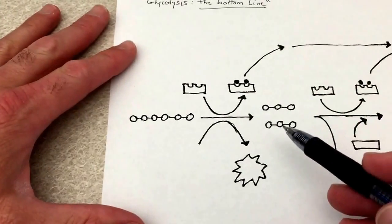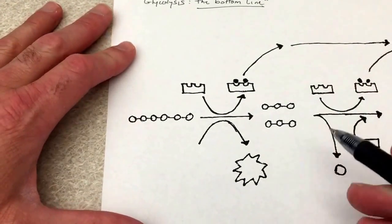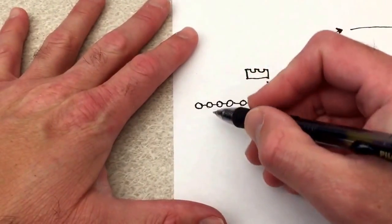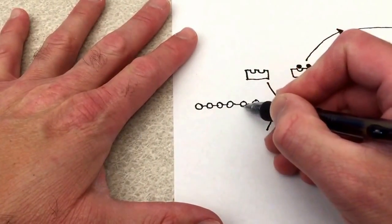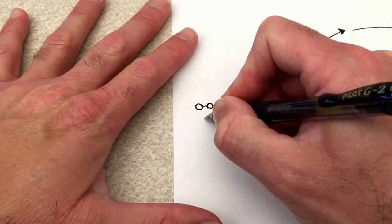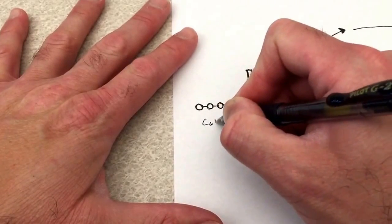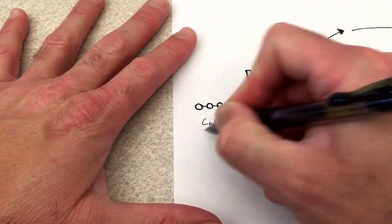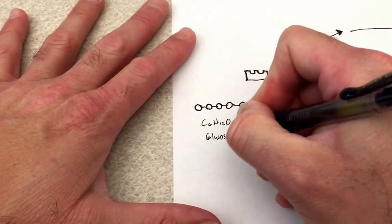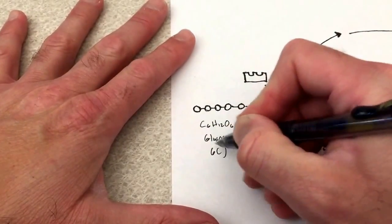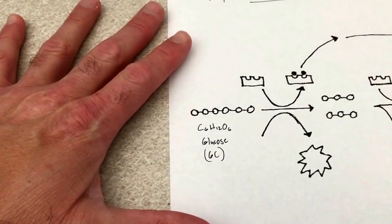Okay, so here on this left-hand side, I'm going to explain what's going on here. So this molecule, which has one, two, three, four, five, six carbons, this is glucose, C6H12O6. It is a six-carbon molecule.